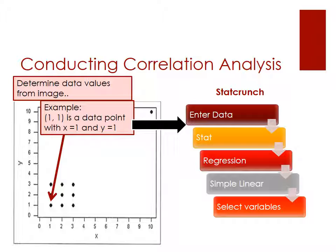For example, this first data point this arrow is pointing to is (1, 1). So it's a data point where X equals 1 and Y equals 1. So looking at the graph, you need to calculate backwards from the graph what each of those data points are and enter them into StatCrunch.